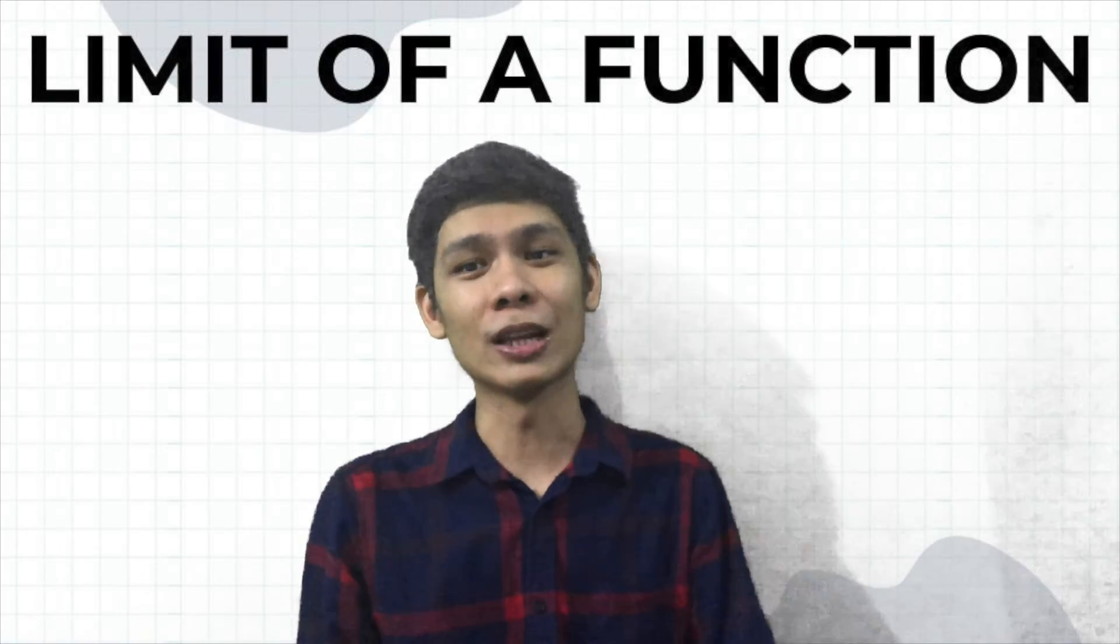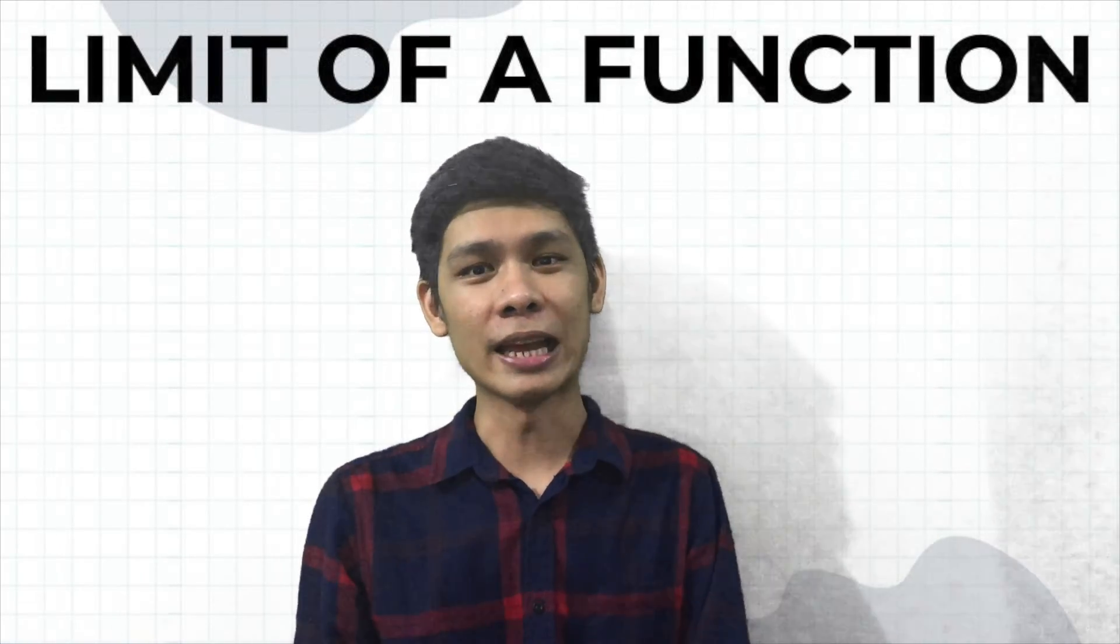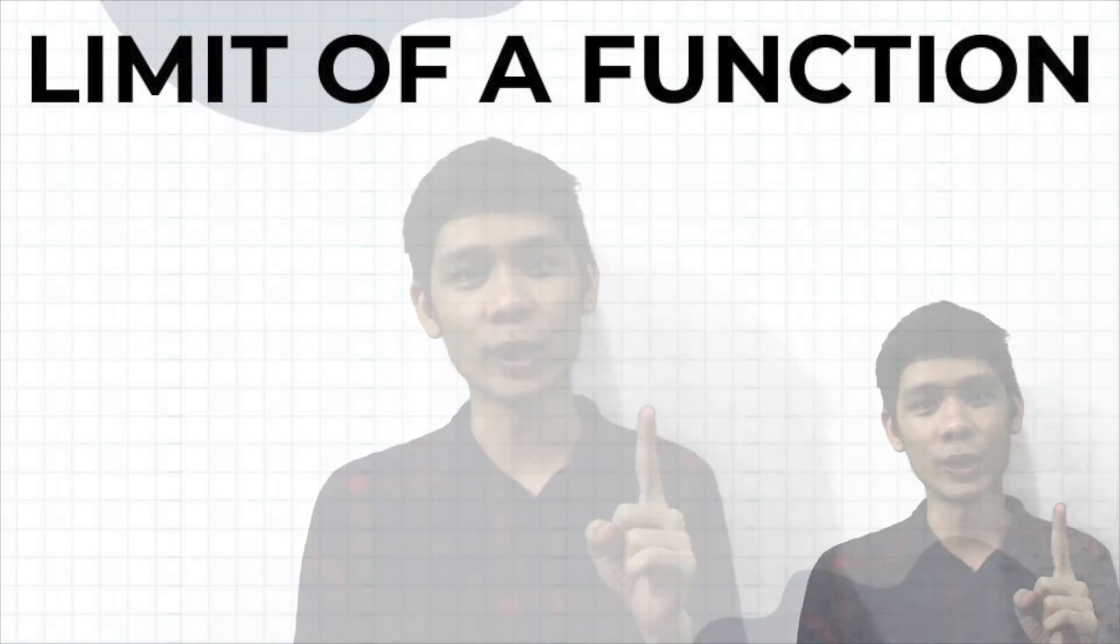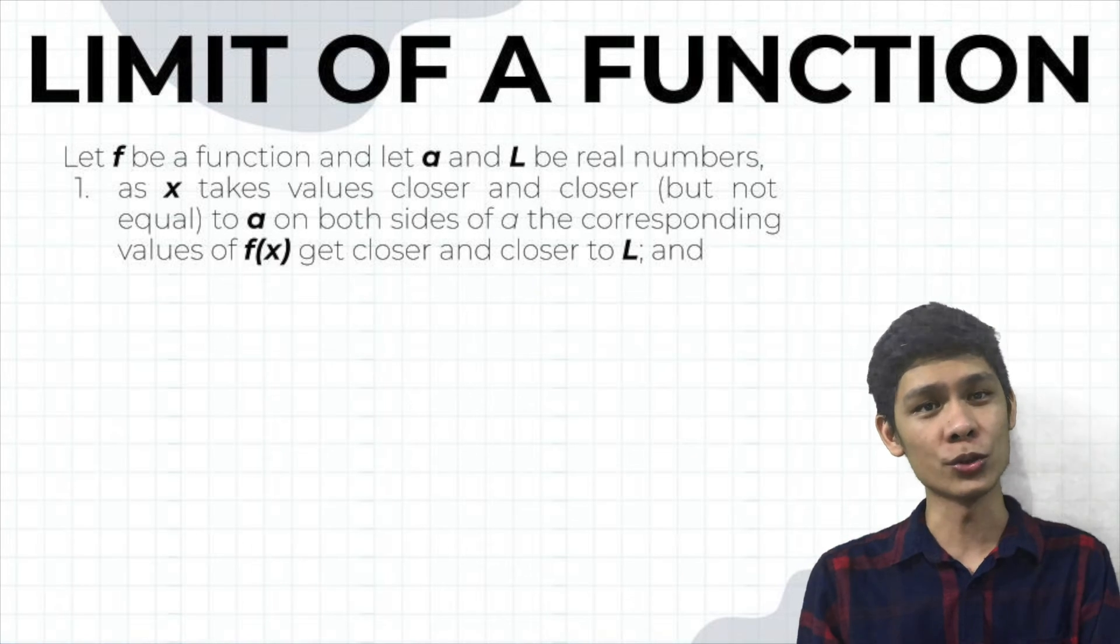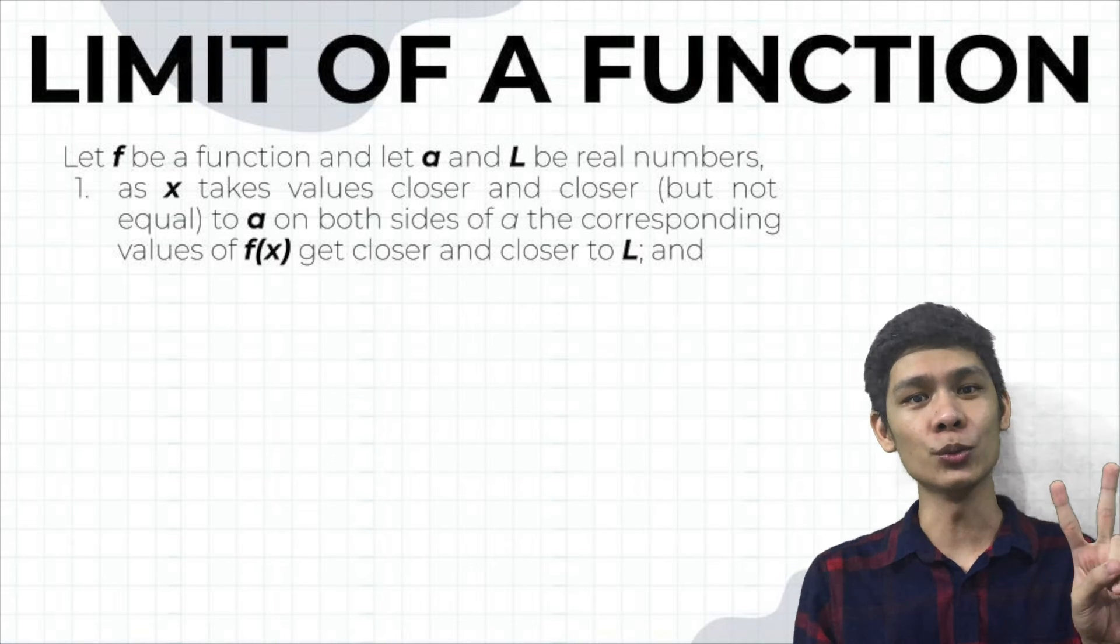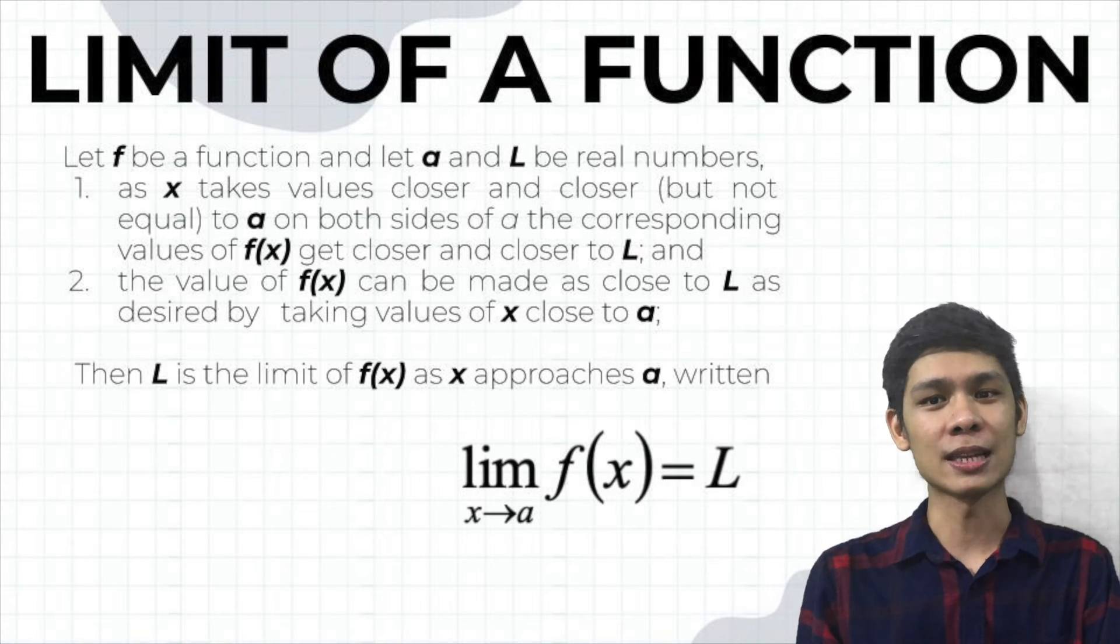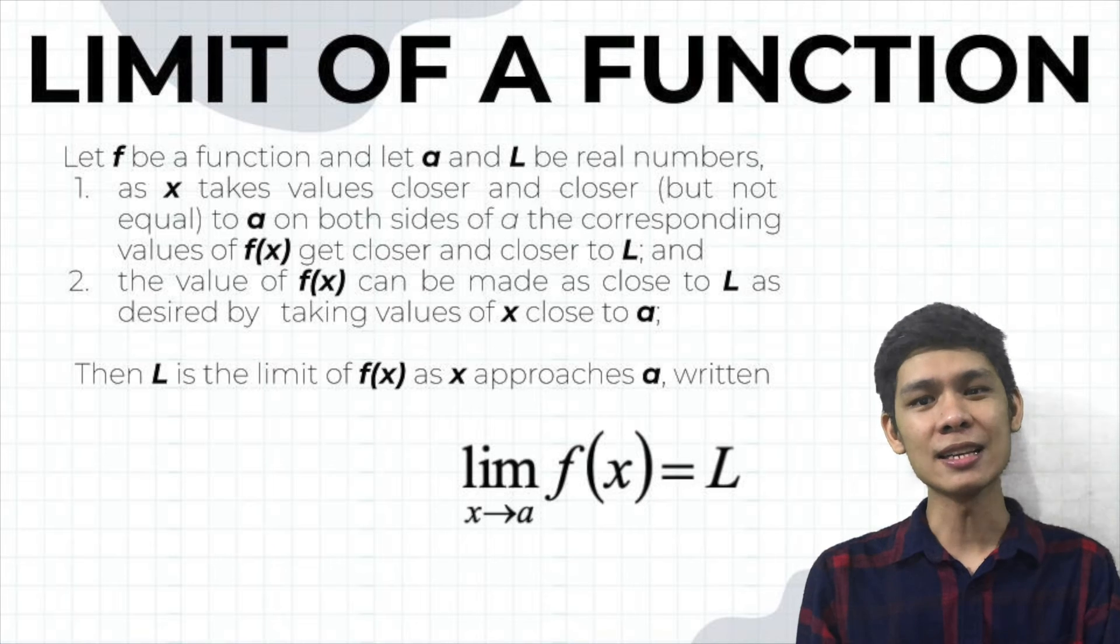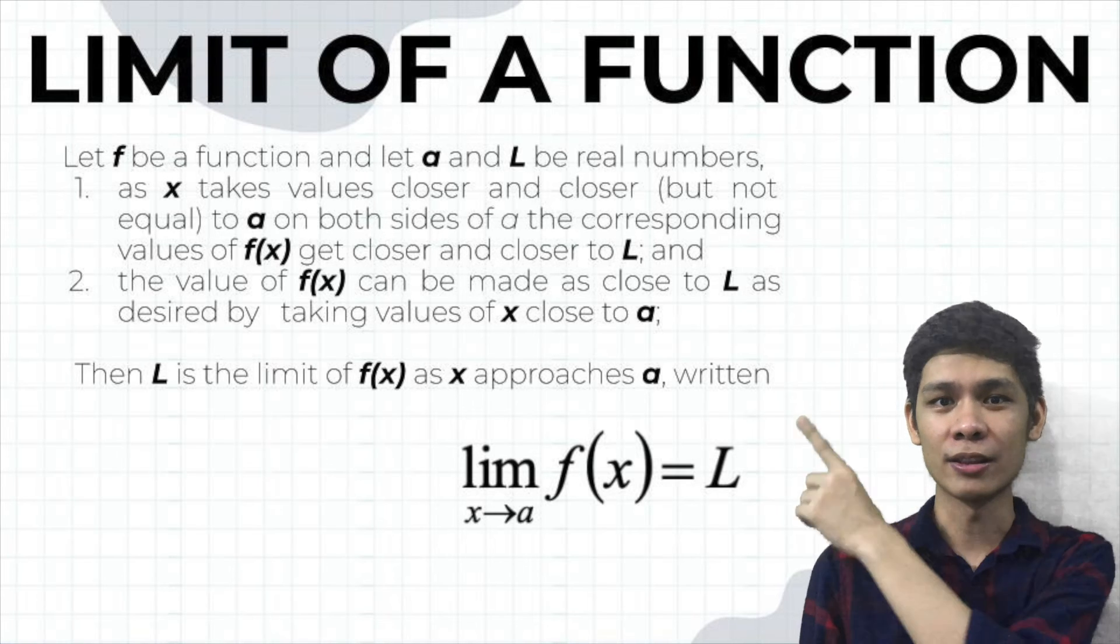Here are two things to remember about the limit of a function. Let f be a function and let A and L be real numbers. First one, as X takes the values closer and closer but not equal to A, on both sides of A, the corresponding values of f(x) get closer and closer to L. And number 2, the value of f(x) can be made as close to L as desired by taking values of X close to A. Then, L is the limit of f(x) as X approaches A written as this one.